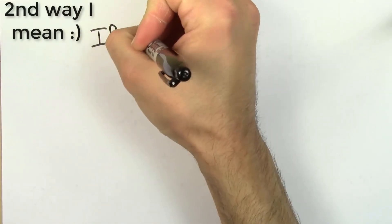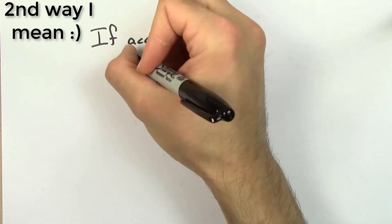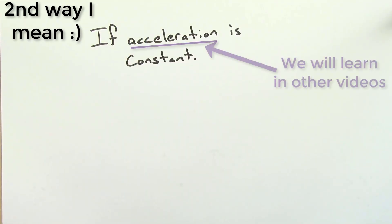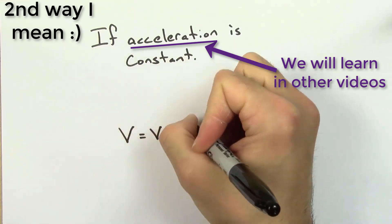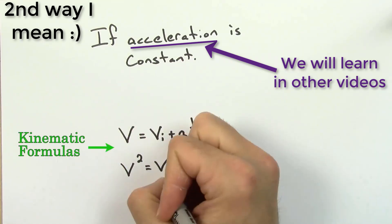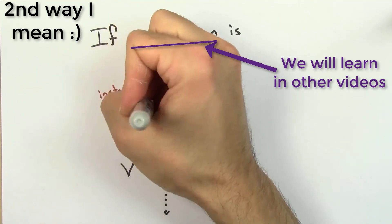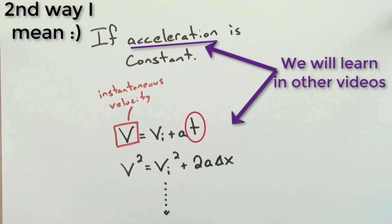A third way to find the instantaneous velocity is for another special case where the acceleration is constant. If the acceleration is constant, you can use the kinematic formulas to find the instantaneous velocity v at any time t.